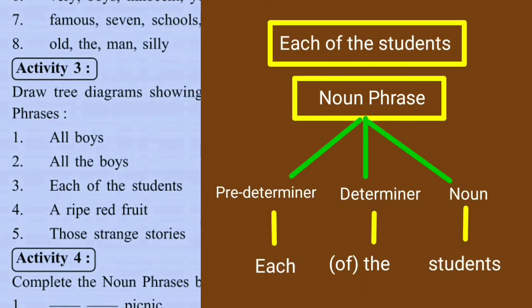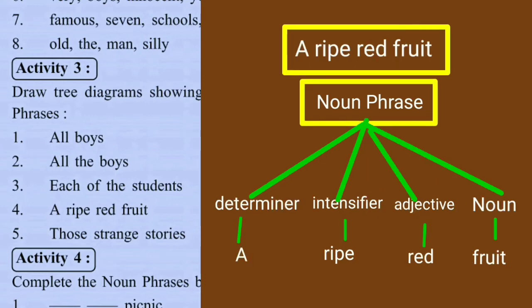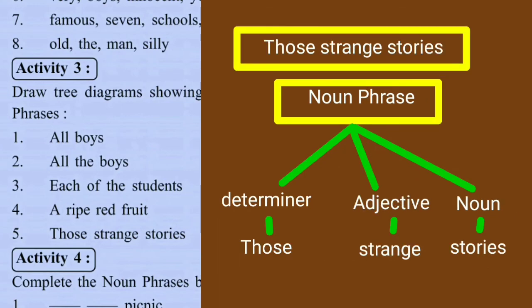In 'a ripe red fruit': 'a' is a determiner (article), 'ripe' is an intensifier, 'red' is an adjective, and 'fruit' is the head noun. In 'those strange stories': 'those' is a demonstrative determiner, 'strange' is an adjective, and 'stories' is the head noun.